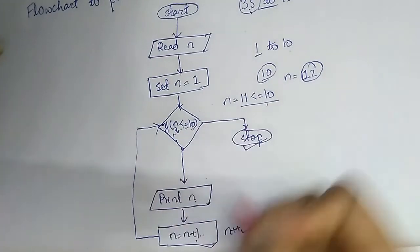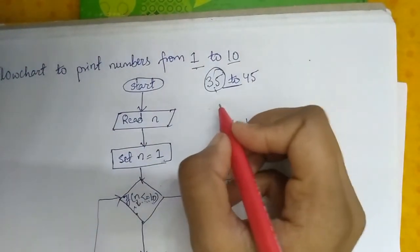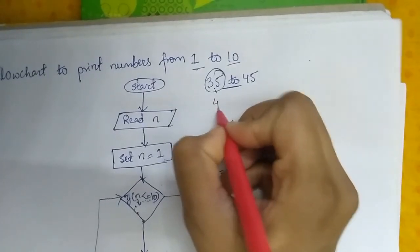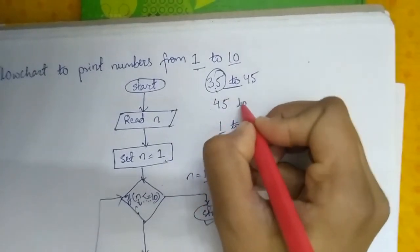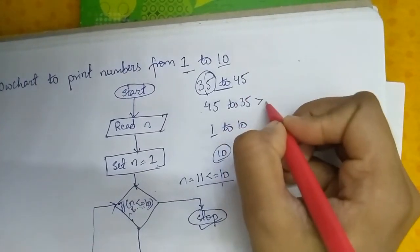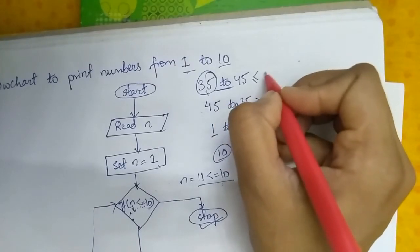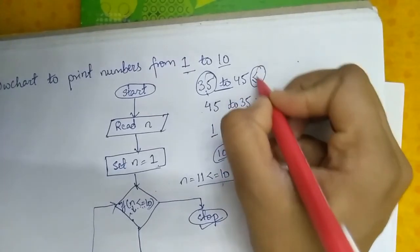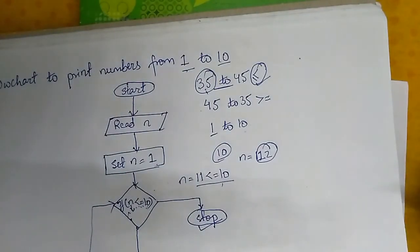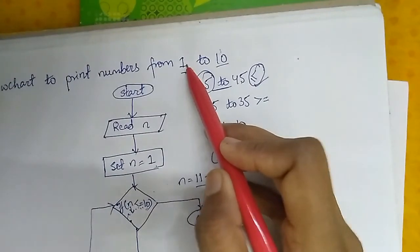And when you are doing 45 to 35 it will be greater than or equal to. And here it will be less than or equal to where you can write equal to like this also. So this much for today's class. In the next video we will do flowchart in the reverse order, 10 to 1.